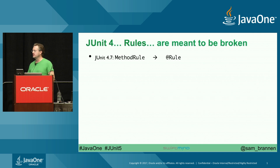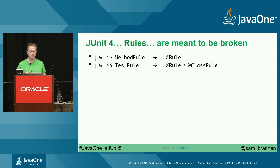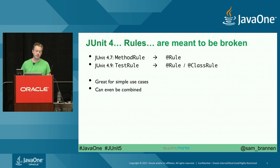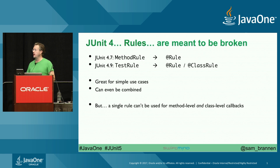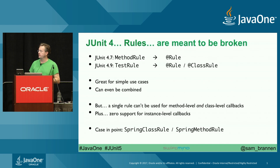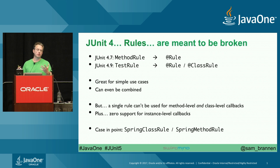In JUnit 4.7, there was this method rule. You can annotate something with that rule and have it registered. Then they came up with class-level support with a test rule in JUnit 4.9. That's great for simple use cases and they can even be combined, but a single rule can't be used for both method-level and class-level callbacks. Plus there's zero support for instance-level callbacks. For example, Spring support required two rules — a Spring class rule and a Spring method rule — where you really just want to say 'I just want Spring.'